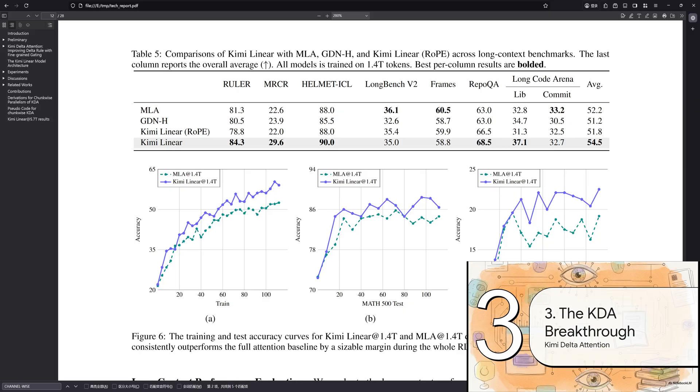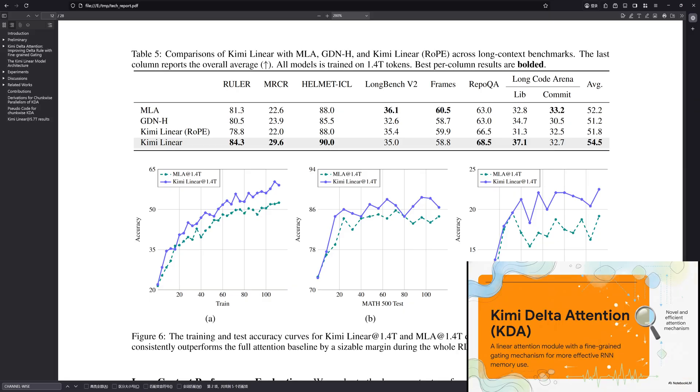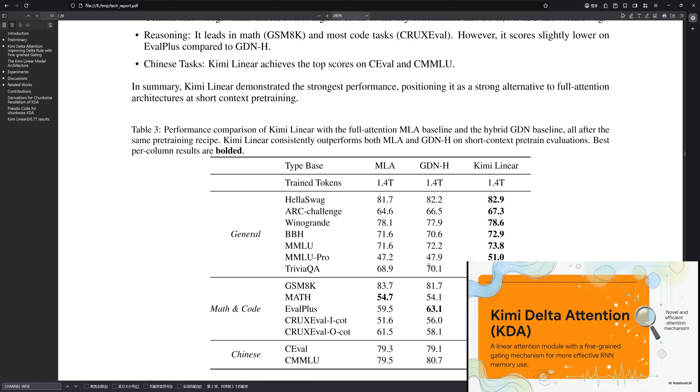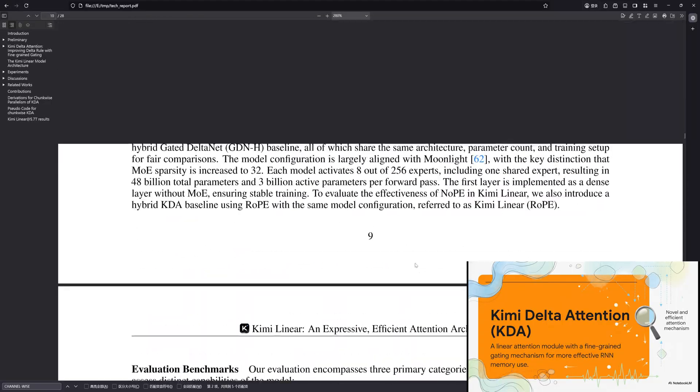So what is it that makes those efficient layers so darn special? Well, this is where we get to the real secret sauce of Kimi Linear. It's an innovation they call Kimi Delta Attention, or KDA for short. Okay, the technical paper calls KDA an extension of an older idea, gated delta net. But the key breakthrough phrase here is, finer-grained gating mechanism. What does that mean? Well, think of it as giving the model a much more precise set of controls over its own memory. What to hang onto, and what it can afford to forget.